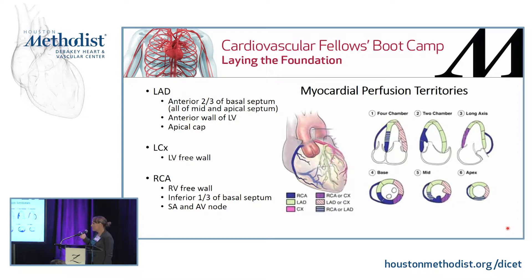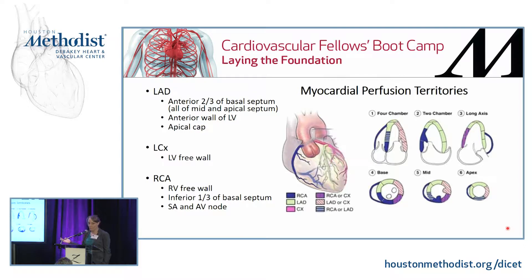Thinking from the standpoint of a more common variant, this is the territory that's going to be fed by the LAD in green or the circumflex in blue. Obviously, you do have people with variant anatomy, and that's what you would pick up on a cath. Between the cath and the regional wall motion abnormality, you'd be able to isolate where the ischemia is occurring.